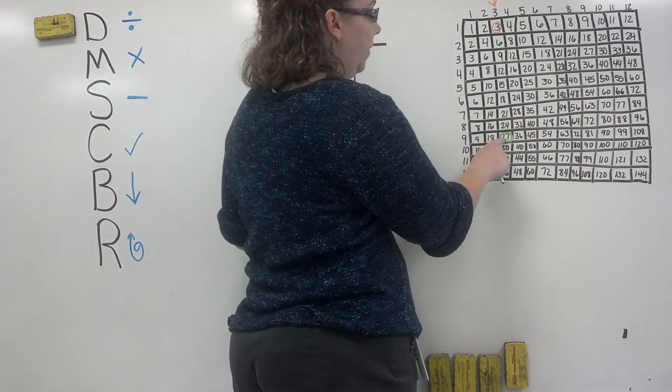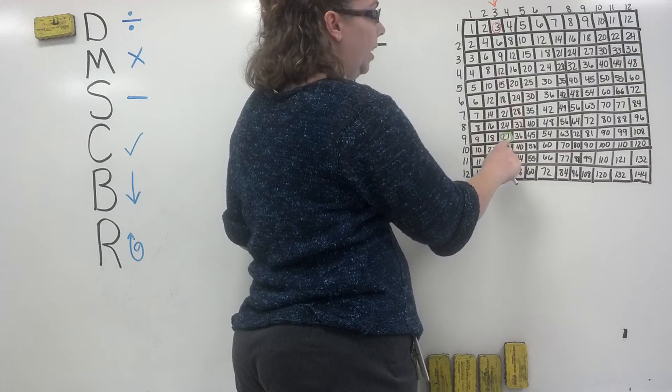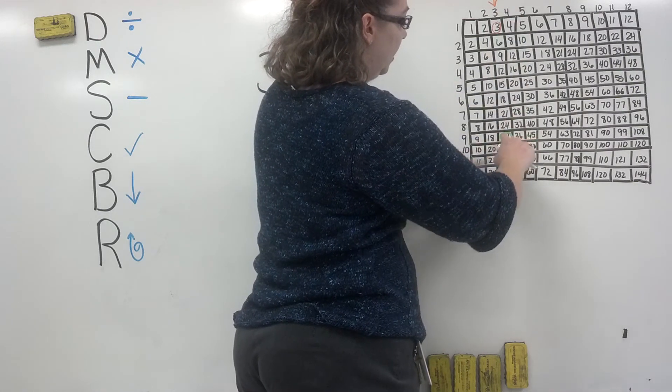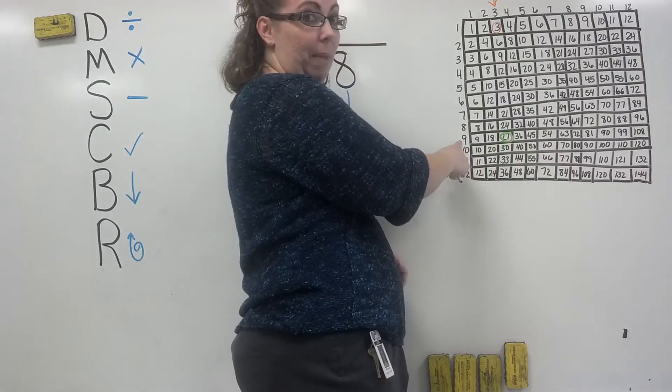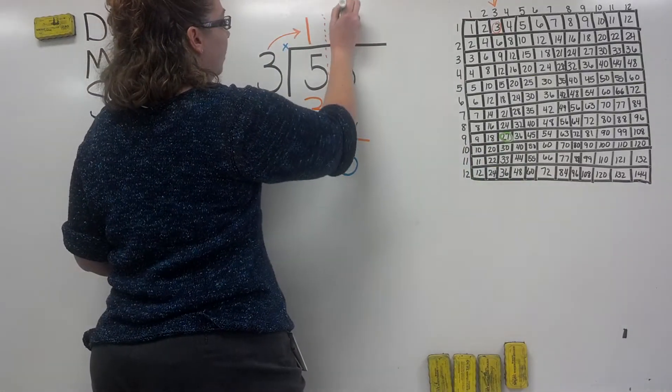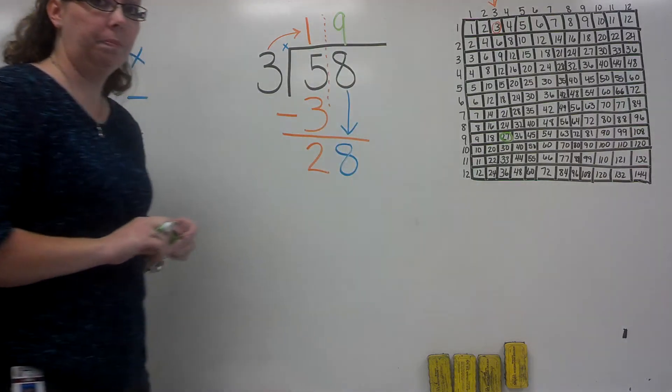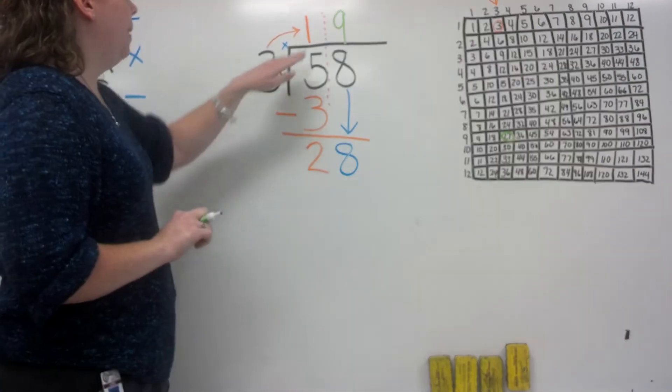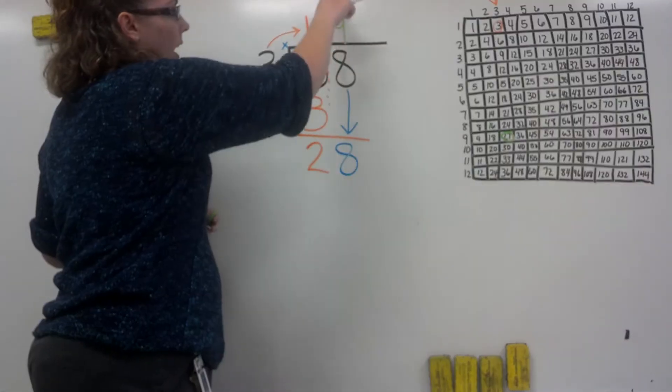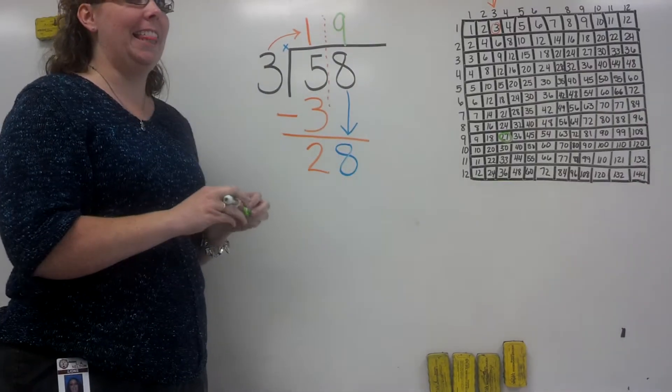We need to figure out that 3 times what equals this number. If we take our hands and count, 3 and 9 make 27. So we know that our 9 is going to go up here. Make sure you remember we're working on this column, so that 9 needs to stay in that column.